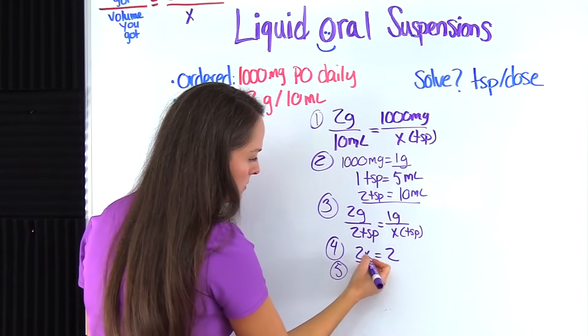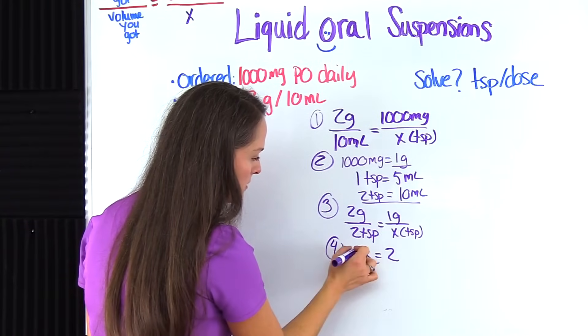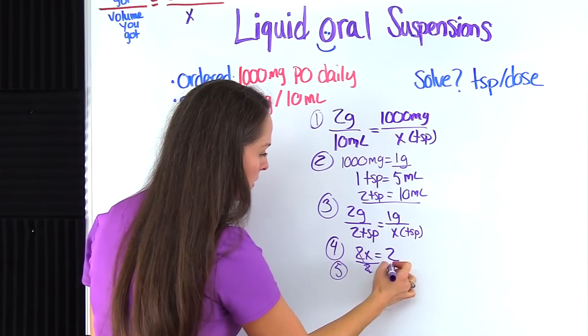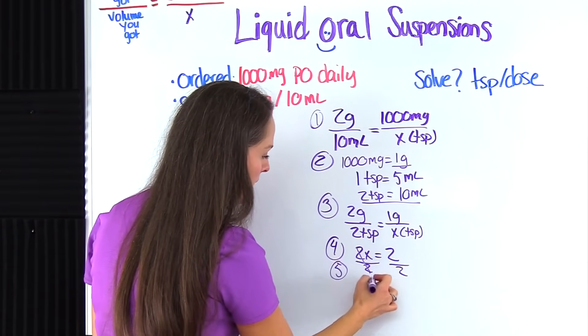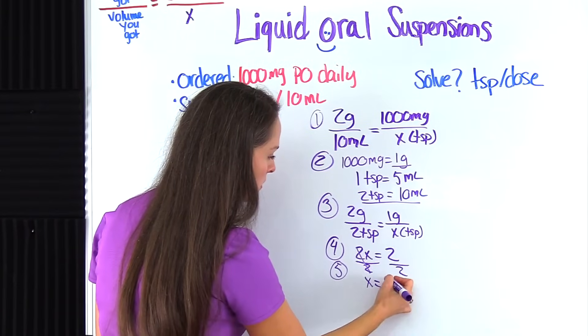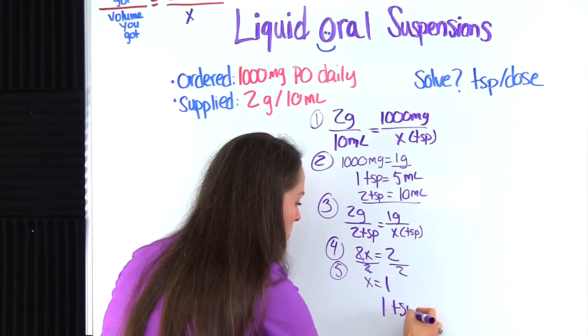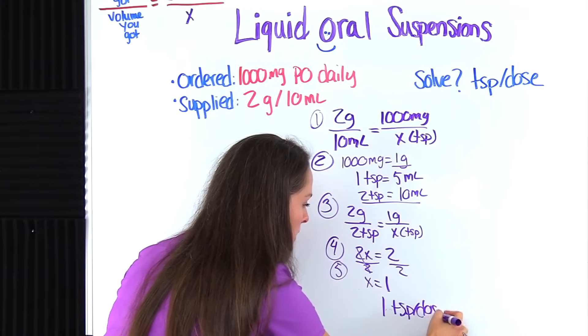To do that, we divide by 2 on this side, so that gets rid of the 2. But what we did on this side, we have to do on this side. So x equals 2 divided by 2 gives us one. Okay, so it's saying that one teaspoon per dose is what we give.